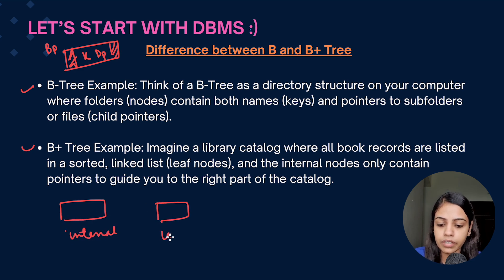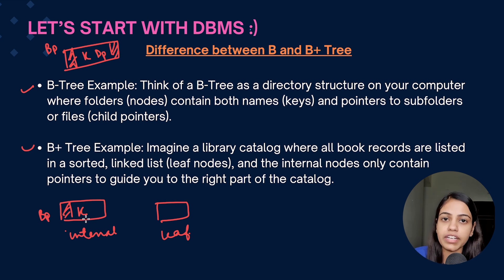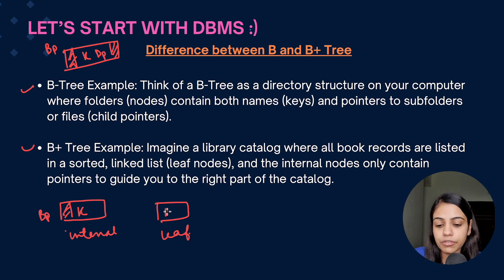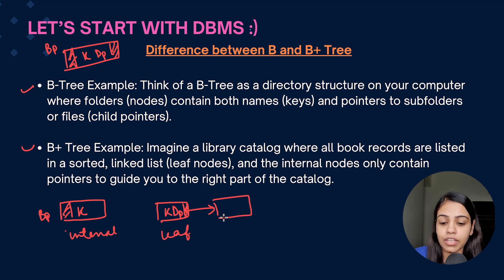Coming to B+ tree, there are structural differences between the internal and the leaf node. In the internal node there is a block pointer pointing to the child address and a key only — there is no data pointer in the internal node. In the leaf node it has a key, a data pointer, and a block pointer which points to the next leaf node, forming a linked list structure at the leaf level.